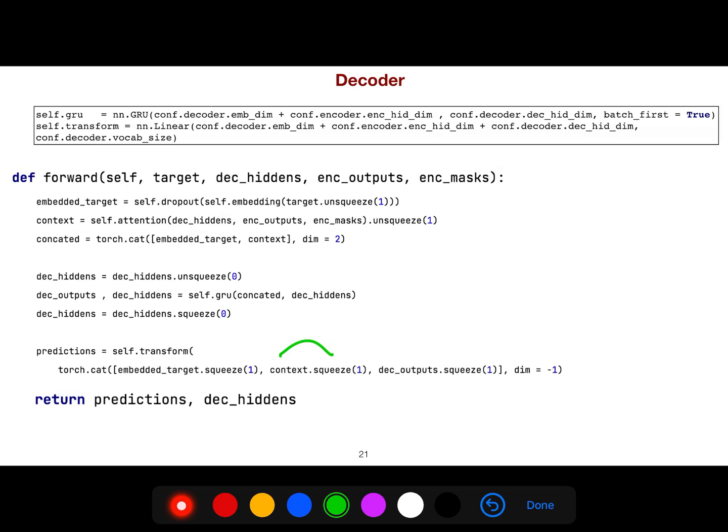And so you have this context, and then you give context to the decoder here. For example, here we just concatenate the embedded and the context and decoder output, and then they give it to transform, to linear it. You see, transform is just a linear model. Nothing to do with that transformer architecture. And then we have predictions.